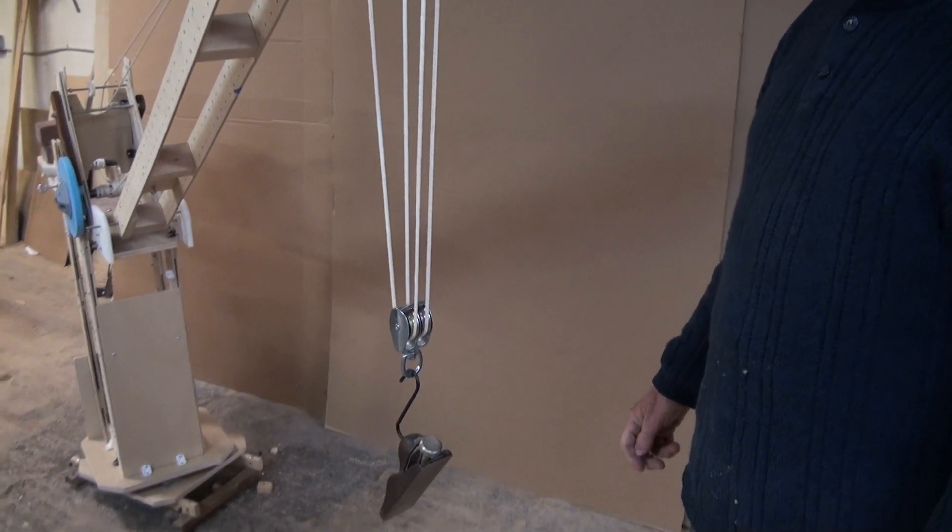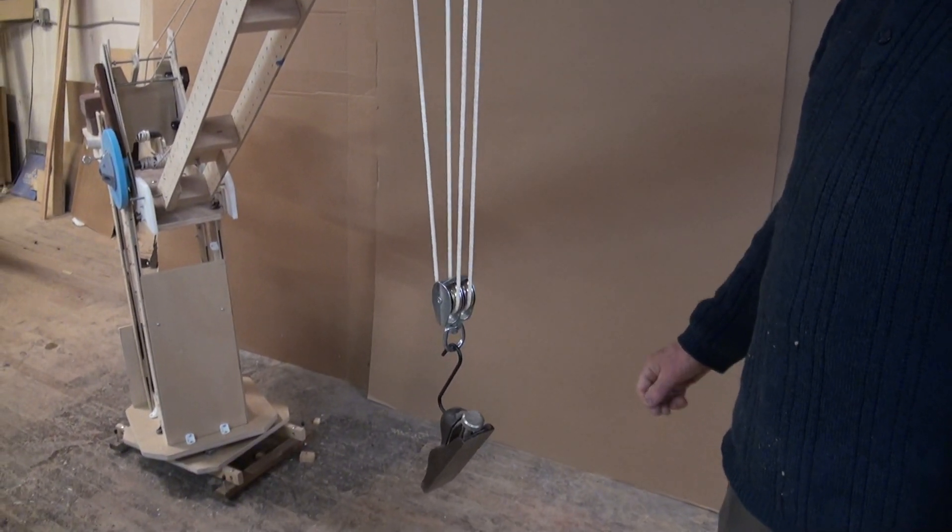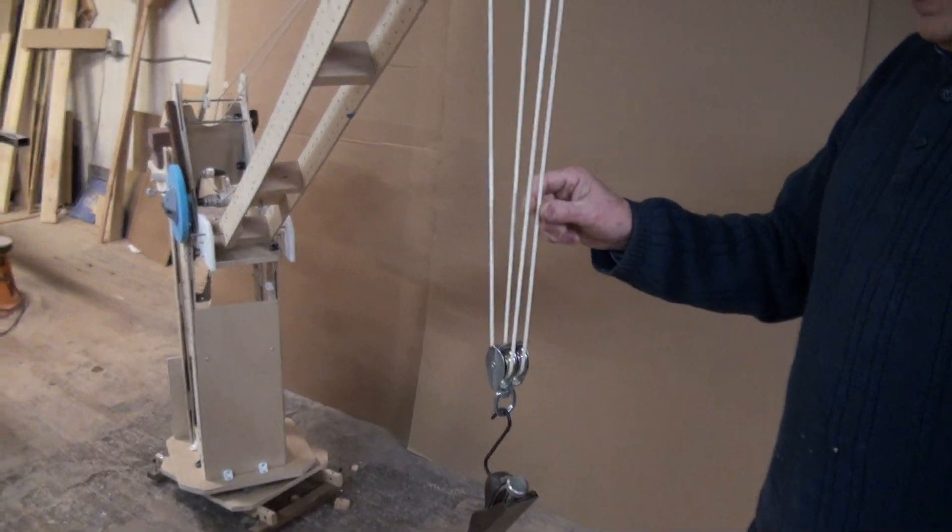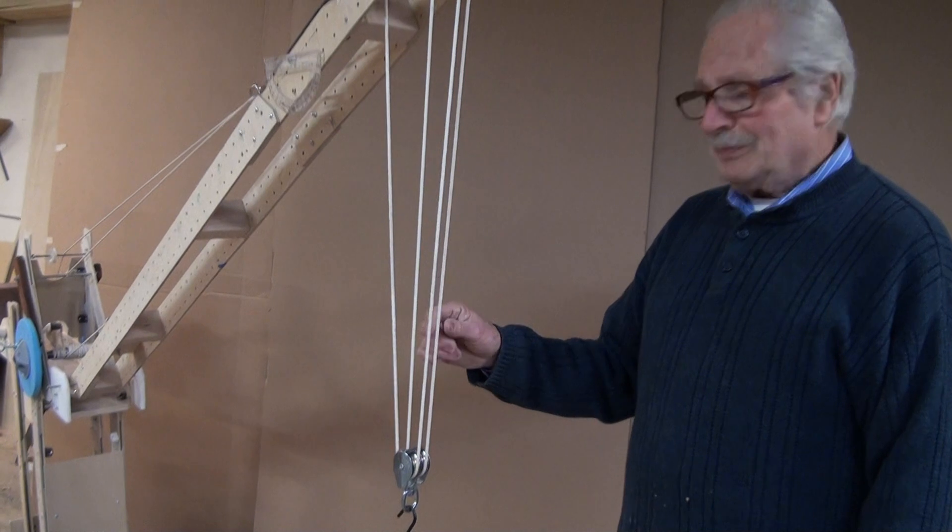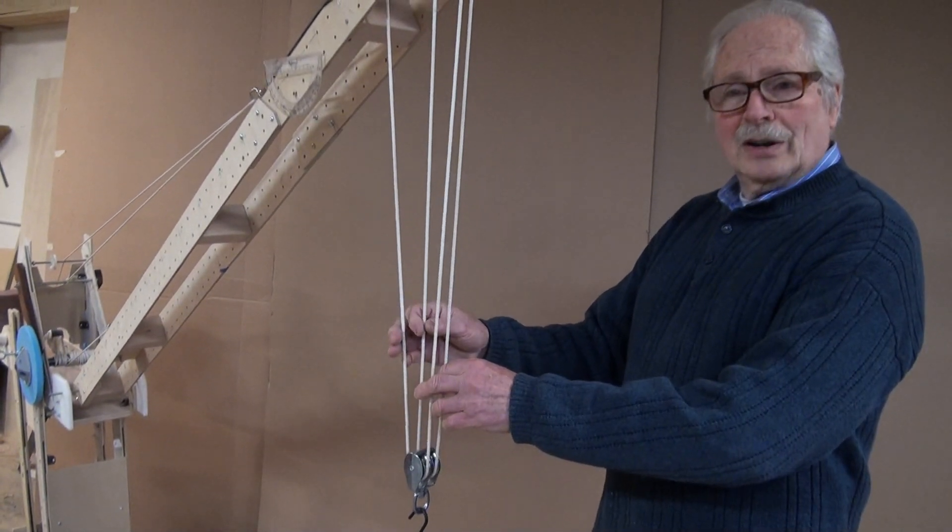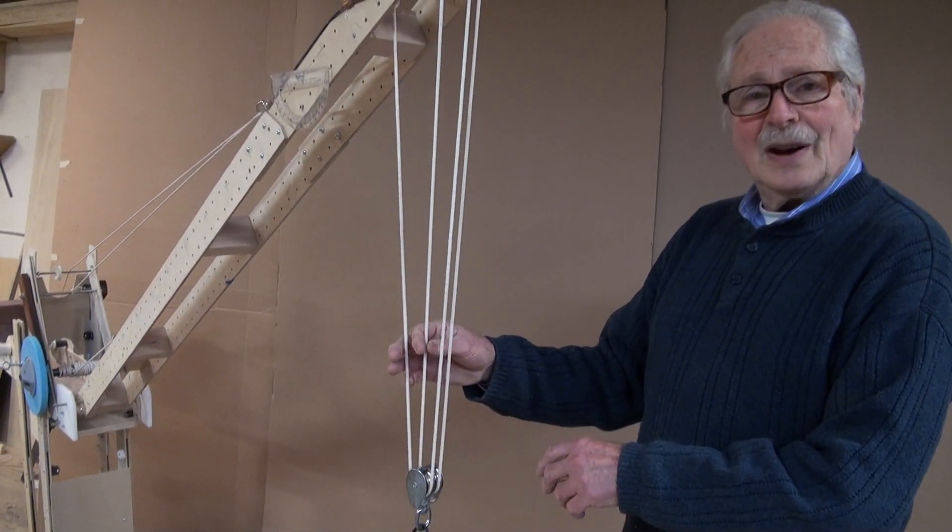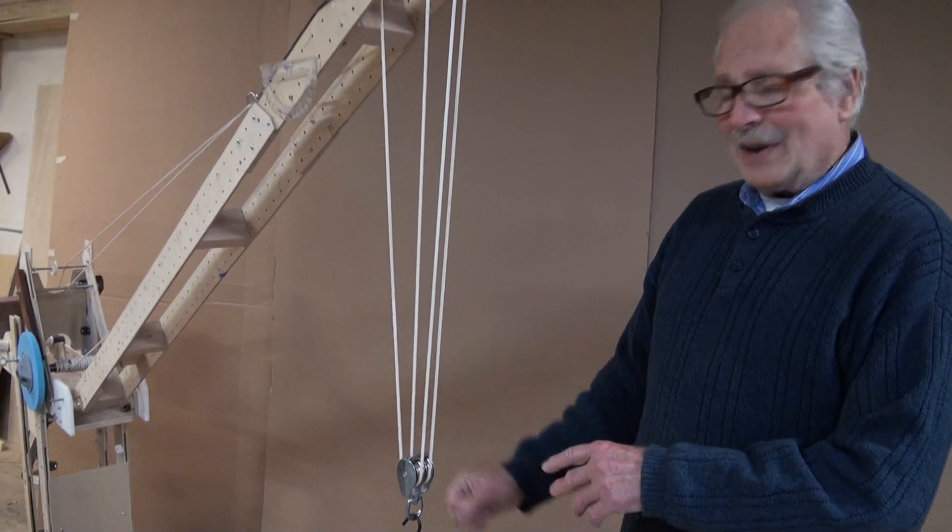If you've got a real heavy load, let's say you've got a 10,000 pound load and the cable you're using is not strong enough to lift 10,000 pounds. If it's divided by four, you've got four parts of line, you're only lifting 2,500 pounds of line. That's the main advantage.